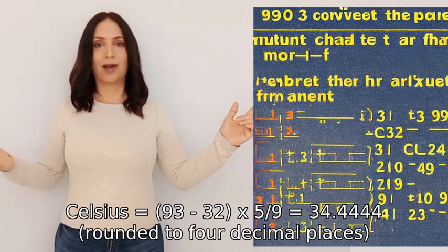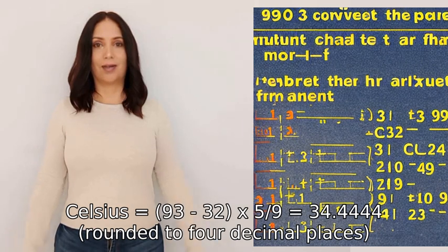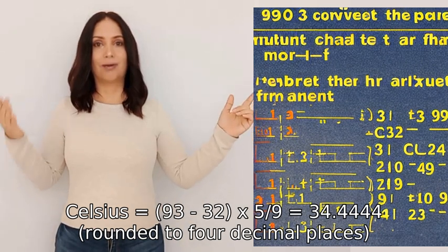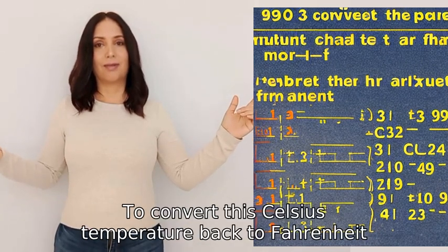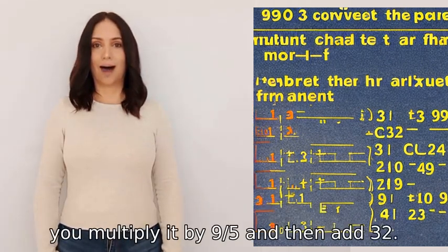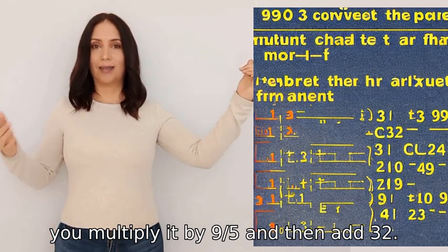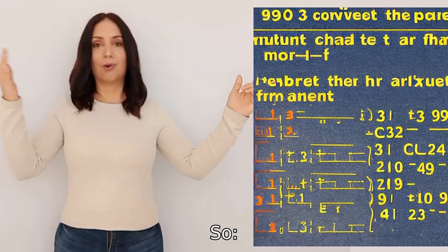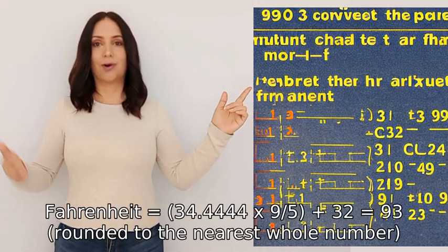This equals 34.4444 rounded to four decimal places. To convert this Celsius temperature back to Fahrenheit, you multiply it by 9/5 and then add 32. So Fahrenheit equals (34.4444 × 9/5) + 32.